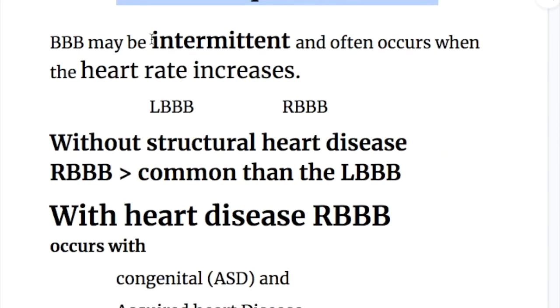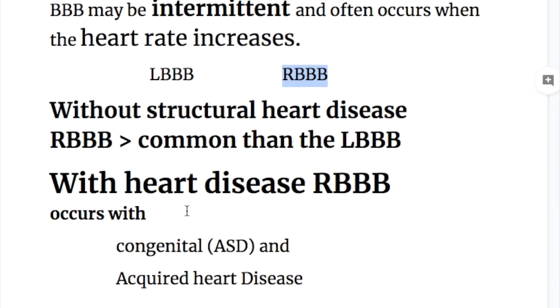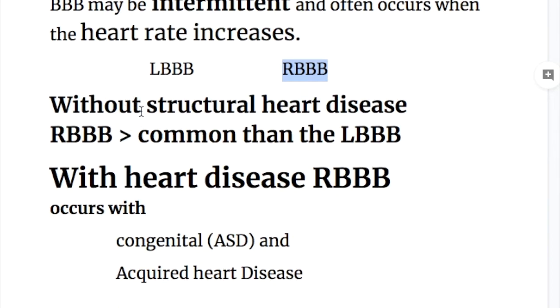The bundle branch block may be intermittent and often occurs when the heart rate increases. It may be a left bundle branch block or a right bundle branch block. Which one is more common? Without structural heart diseases, right bundle branch is more common than the left bundle branch block.